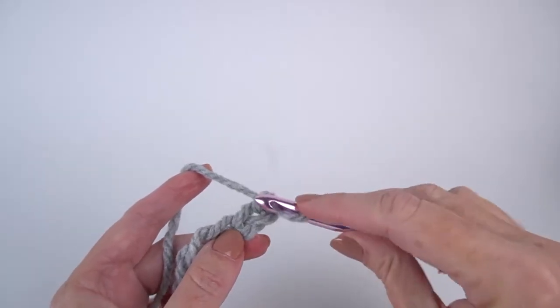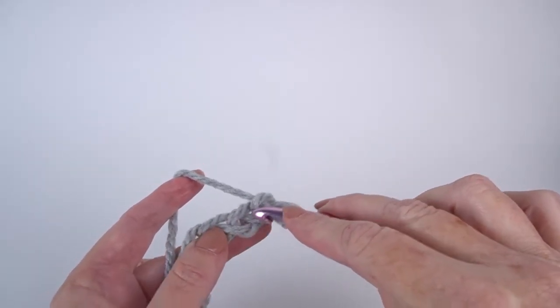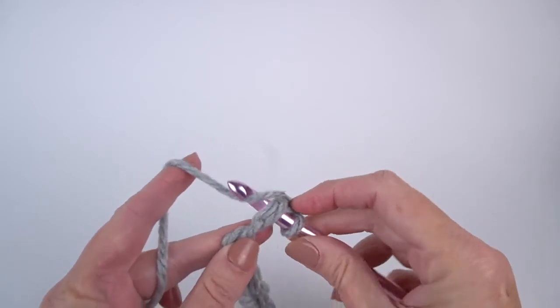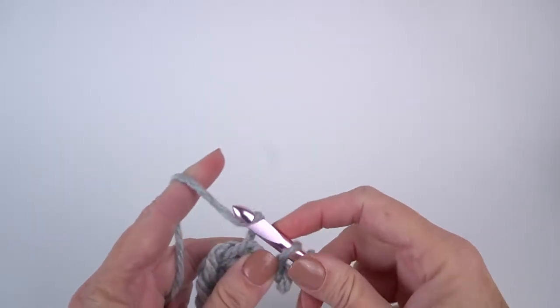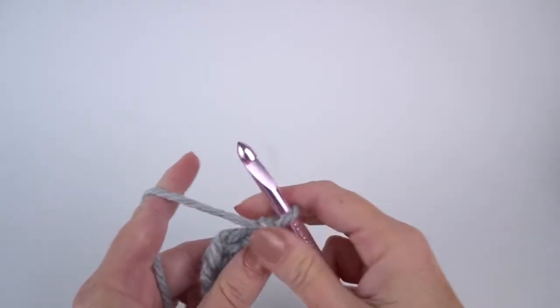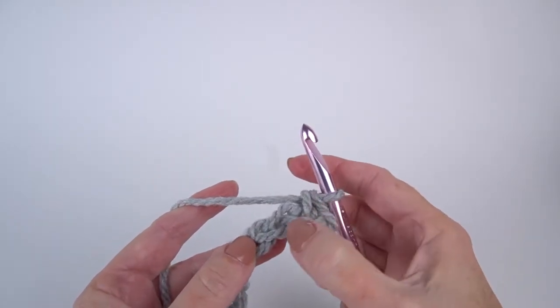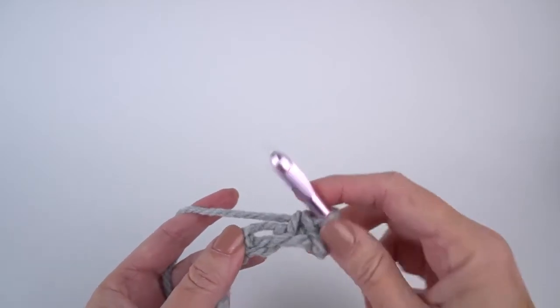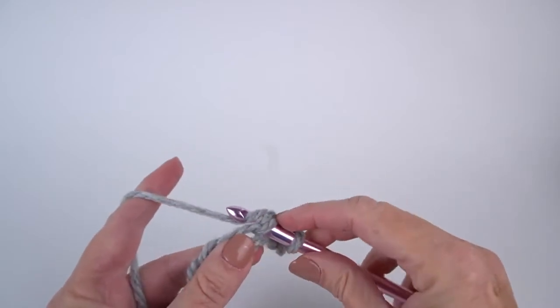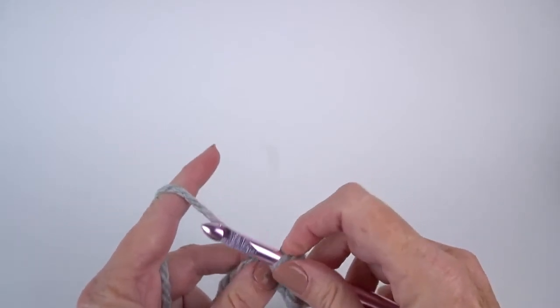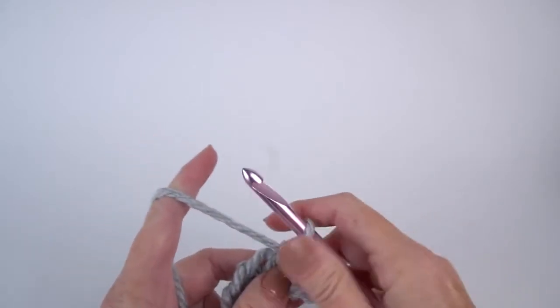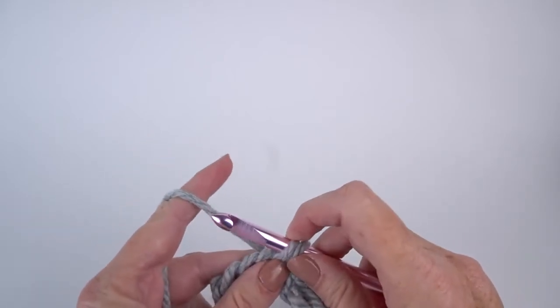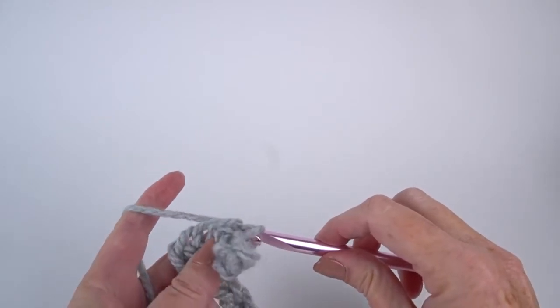So I'm going to take the pointy part of my hook, and I'm going to insert it in that V, but under two legs of that chain, and finish my single crochet. All right, so there's my next chain. I see one, two, three legs. I'm going to work under two and finish my single crochet. So that is working into the front of the chain under two legs.